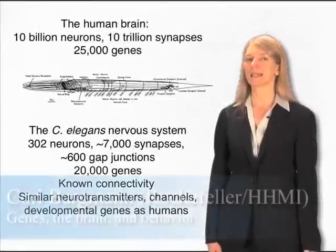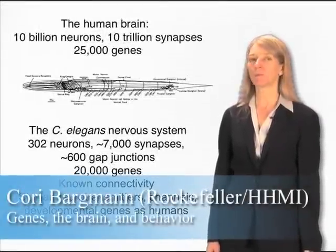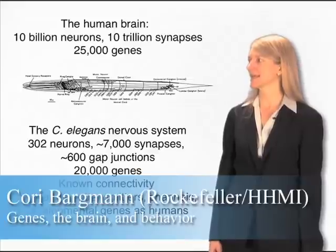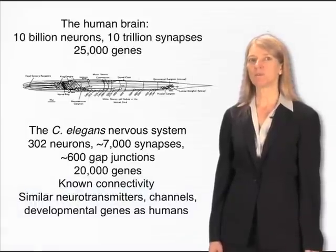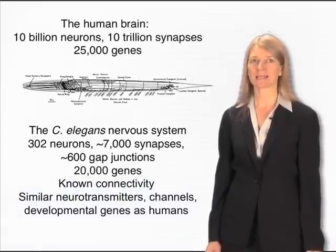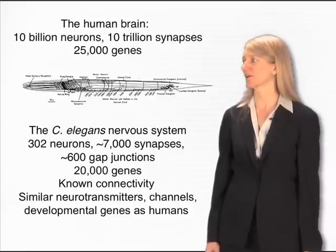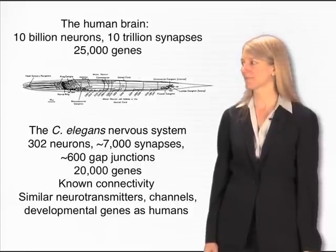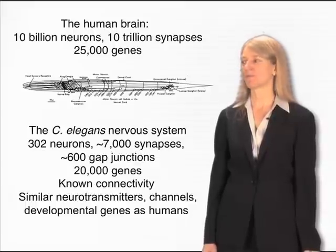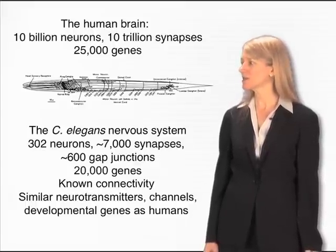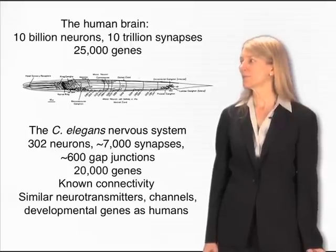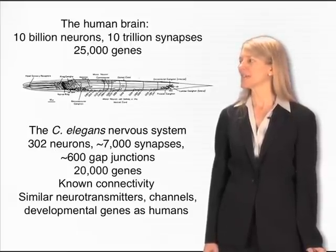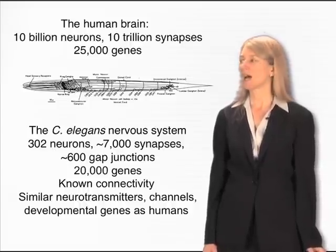I'm going to talk about this in the context not of the noble human brain, but of the noble brain of the nematode worm, Caenorhabditis elegans. Why would we study a simple animal instead of humans? The reason is that the human brain is almost unimaginably complex — it has billions of neurons connected by trillions of synapses. By contrast, the nervous system of C. elegans has only 302 neurons connected by 7,000 synapses and another 600 or so gap junctions. This much simpler nervous system nonetheless shares many components with the human nervous system.